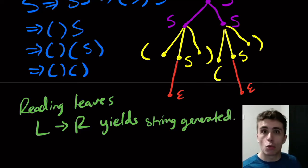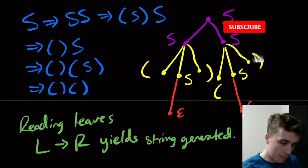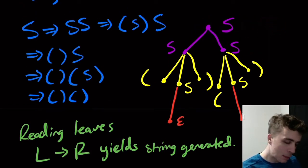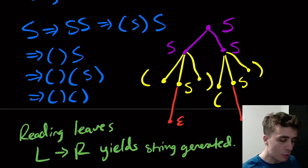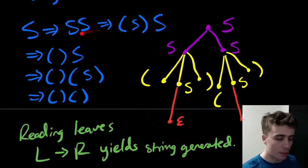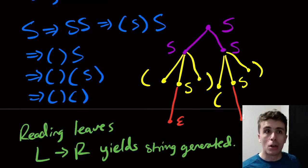One thing that you can prove is that leftmost derivations correspond exactly to parse trees. They correspond one to one. Every leftmost derivation has exactly one parse tree, and every parse tree has exactly one leftmost derivation. That's pretty easy to see.